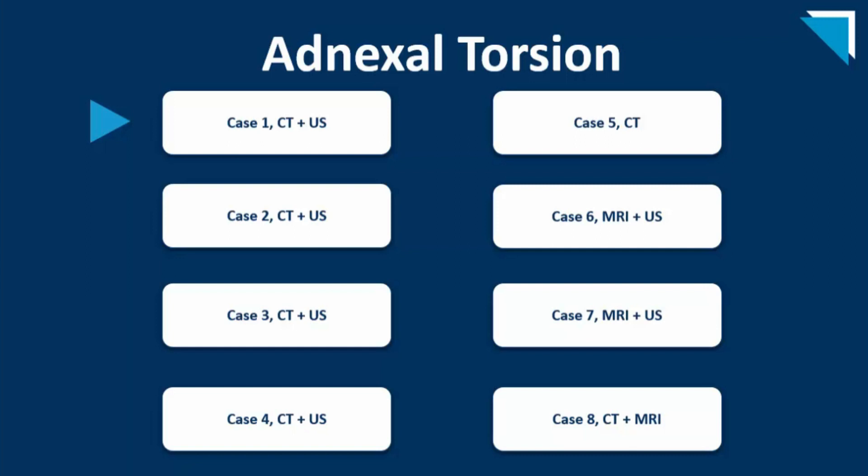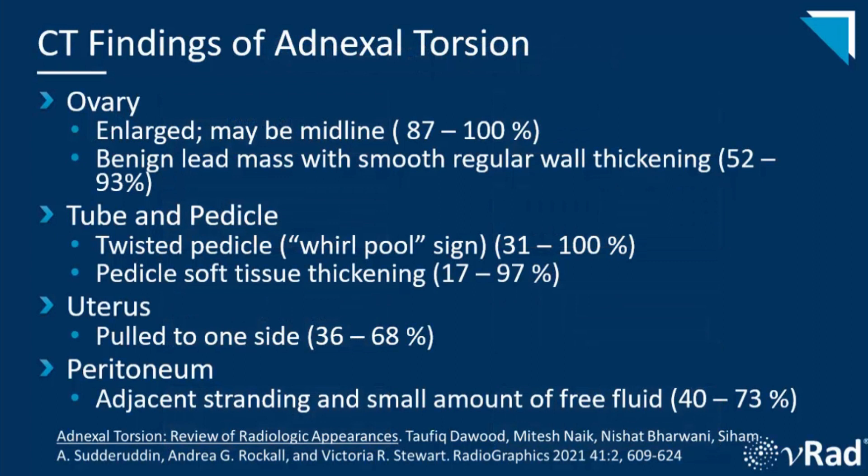The major findings to keep in mind are ovarian enlargement and edema, which are the most common and most helpful, with abnormal ovarian positioning and swirling of the adnexa being less common but highly specific for adnexal torsion. On CT, the ovary is enlarged and may be midline, seen in 87% to 100% of cases. A benign lead mass with smooth regular wall thickening is seen in 52% to 93% of cases. A twisted pedicle or whirlpool sign can be seen in 31% to 100% of cases. Pedicle soft tissue thickening is seen in 17% to 97% of cases, the uterus can be pulled to one side, and adnexal stranding with a small amount of free fluid can be seen in 40% to 73% of cases.